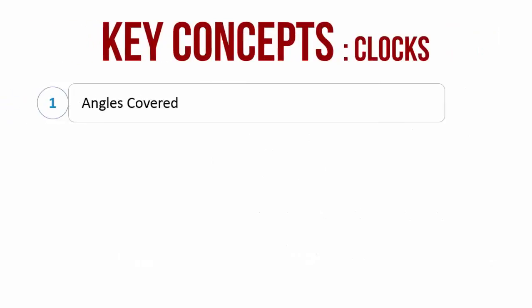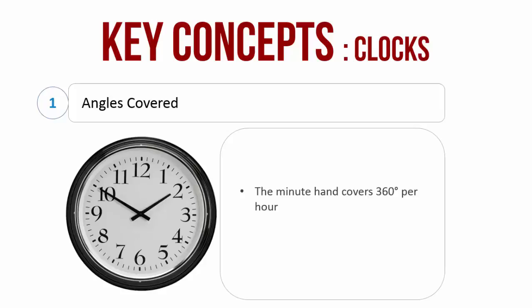There are several key concepts which may be important from the point of view of the IBPS exam with respect to clocks. The first is angles covered. The minute hand covers 360 degrees in one hour. In one hour, the minute hand covers a whole circle, so that is 360 degrees.